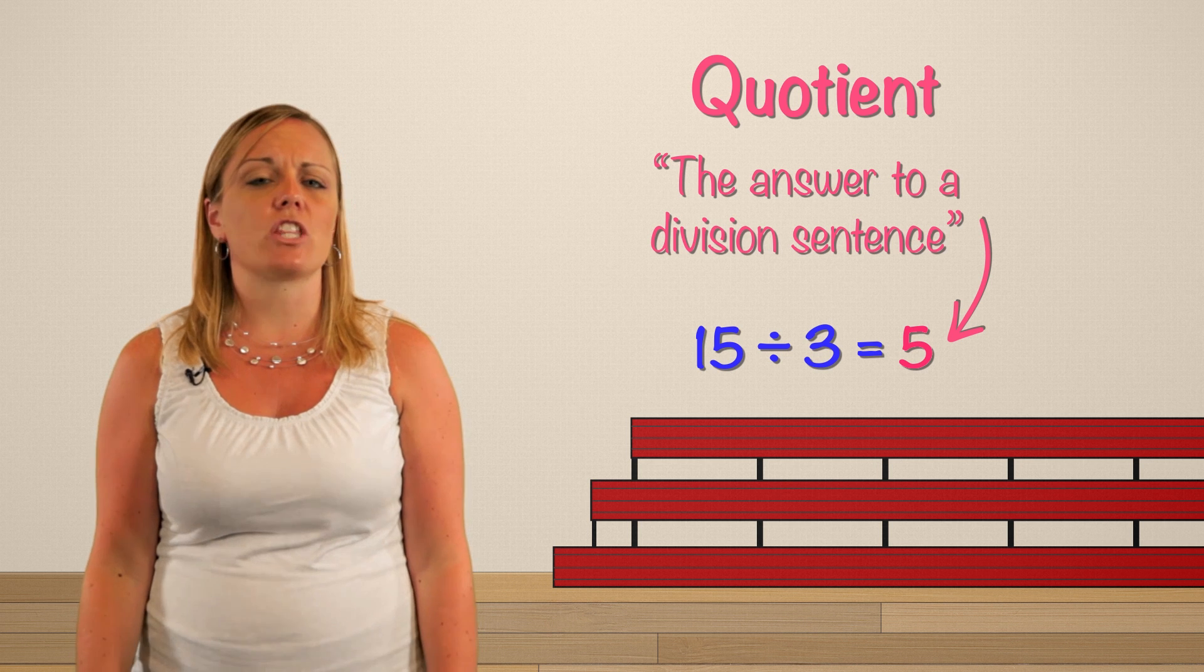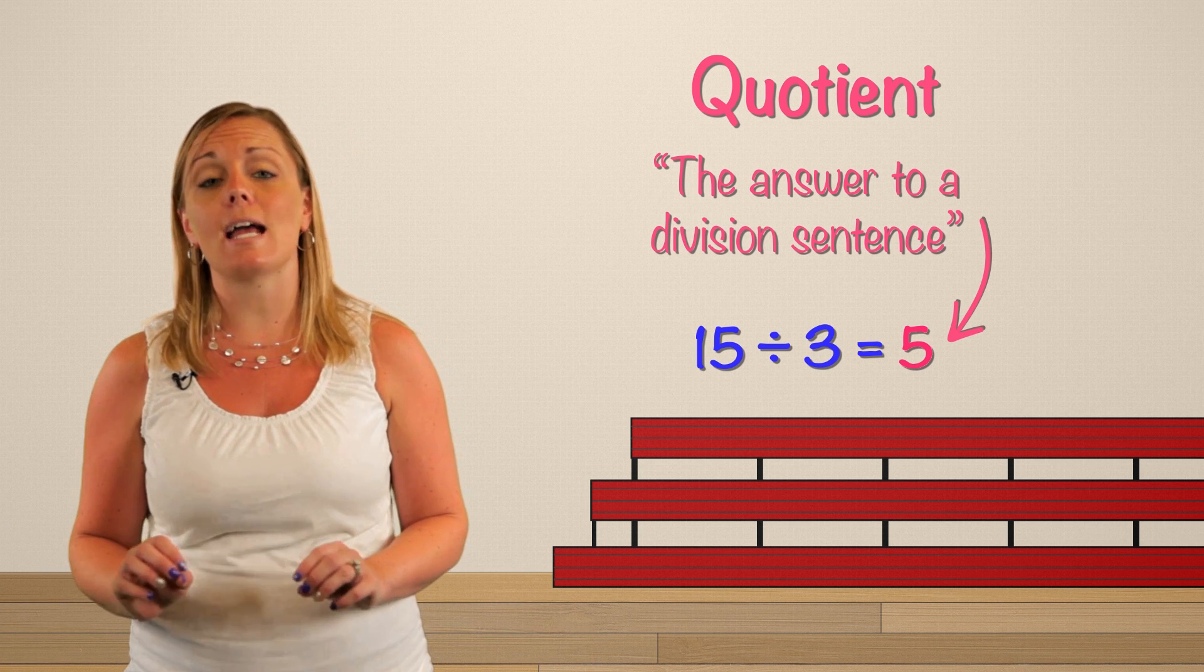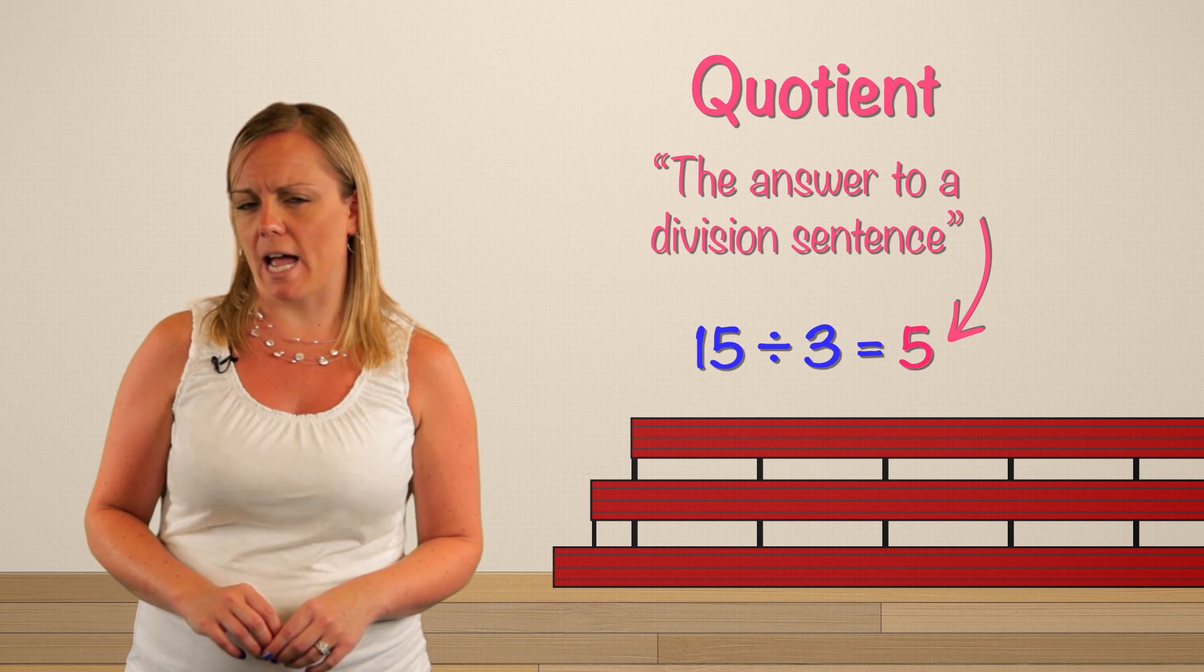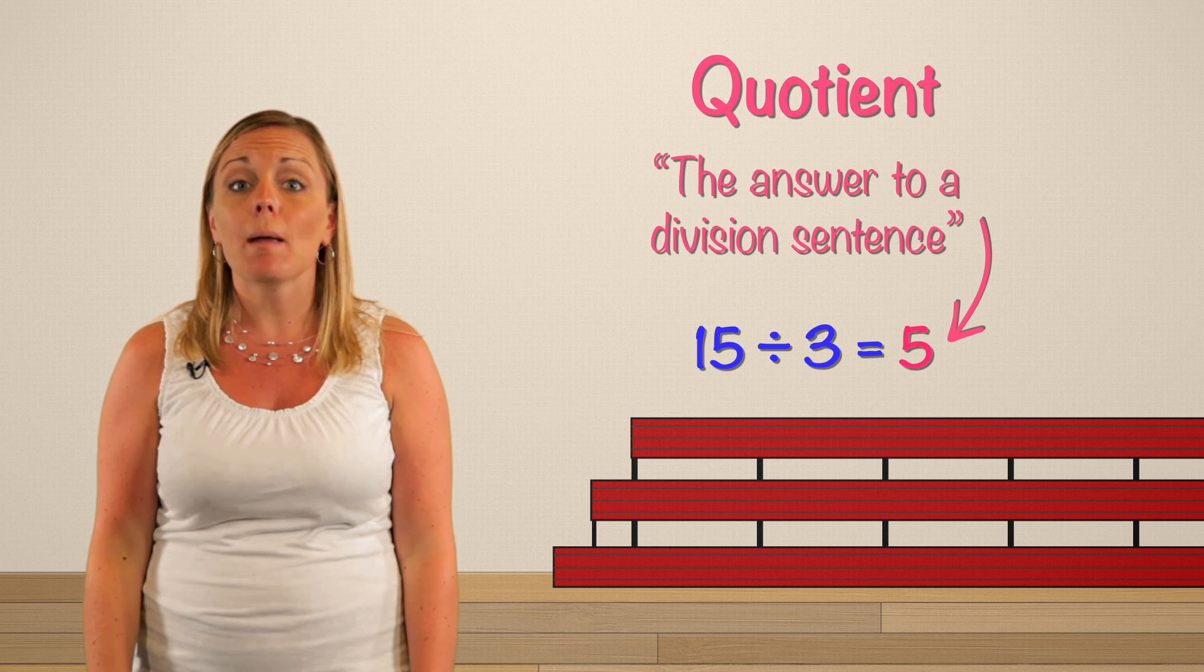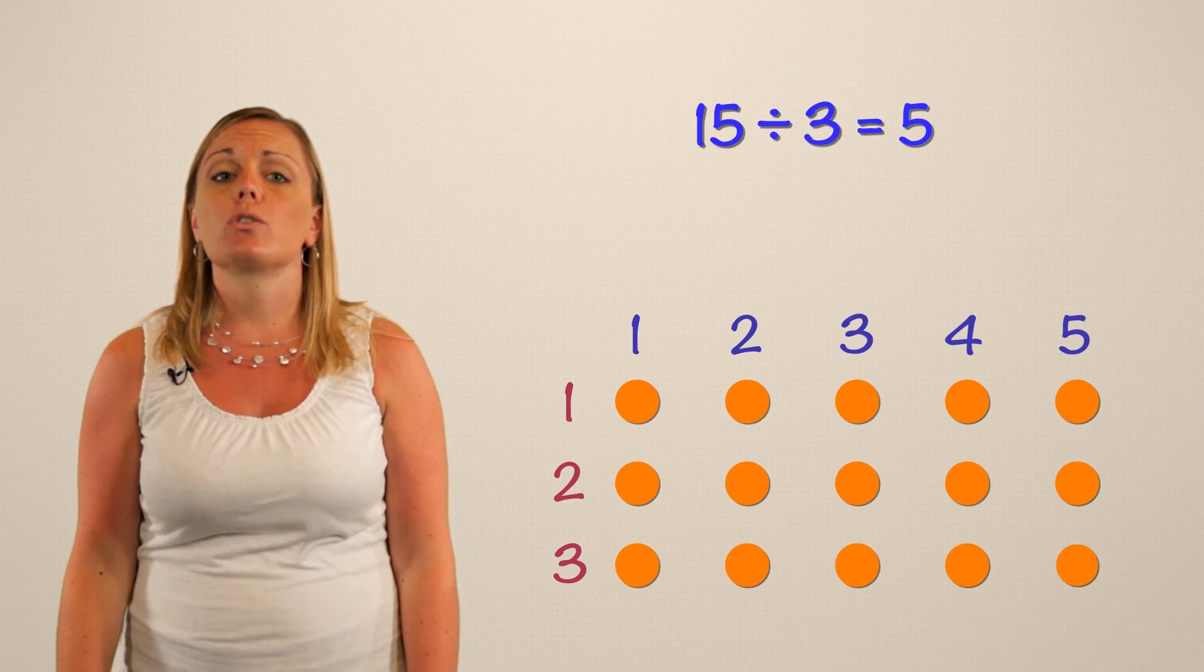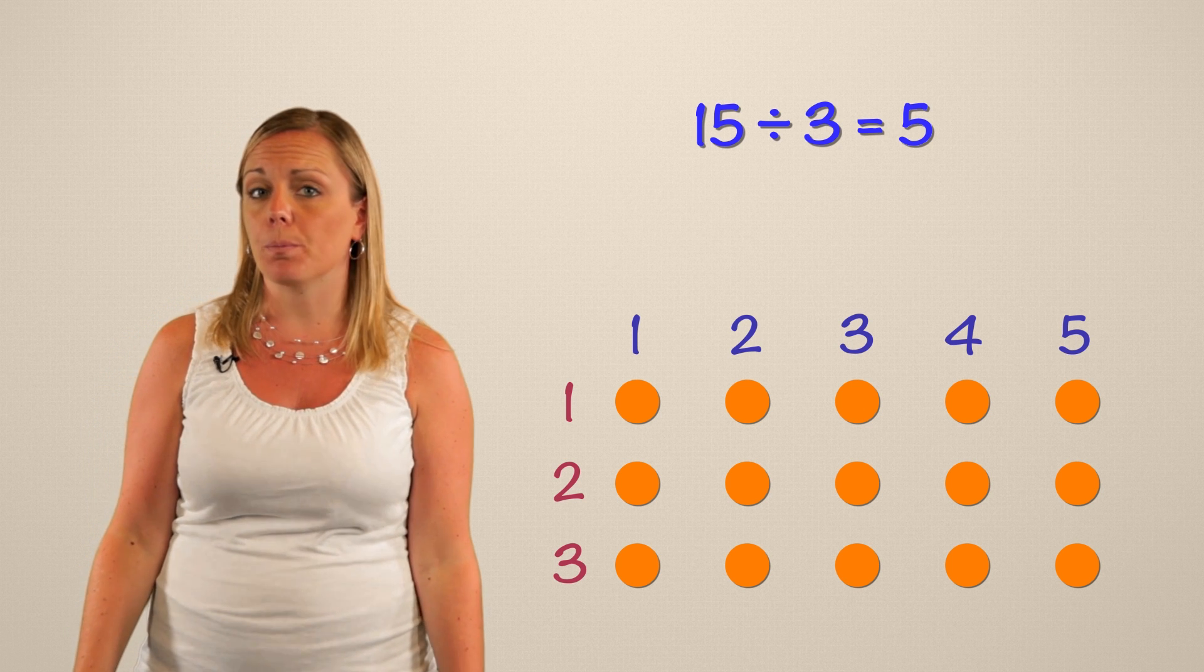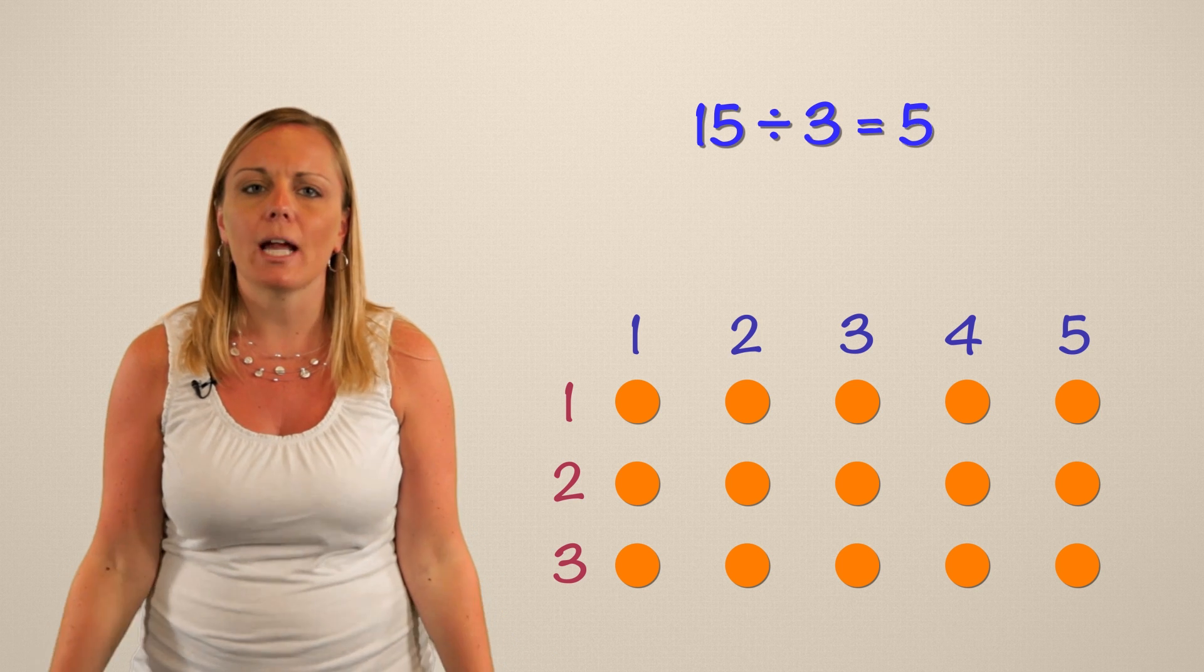Now I want to arrange these spectators in a way where the quotient represents the size of the groups. Which of these number sentences is correct? The quotient or answer is five. So I'm looking for groups of five and we have three rows. So this was the total 15 divided into three groups and that gave us five in each group as our answer.